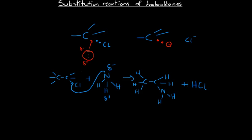So those are the two different ways substitution reactions can occur. A halogen atom bonded to a carbon in a haloalkane can be kicked off either by a negatively charged ion, or by the negative end of a polar molecule. We'll look at a couple of examples now and write a few equations using structural formulae.